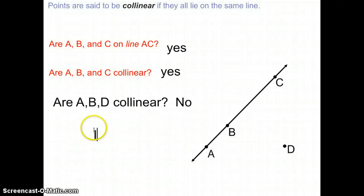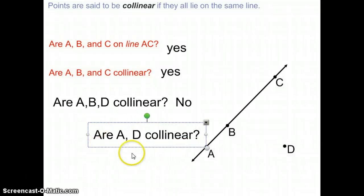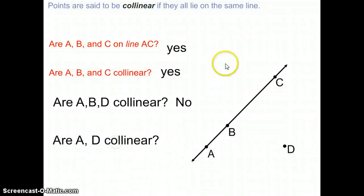Be careful though. So if I ask are A, D collinear, think about that. Even though they're not on this line, between any two points, I can always draw a line.